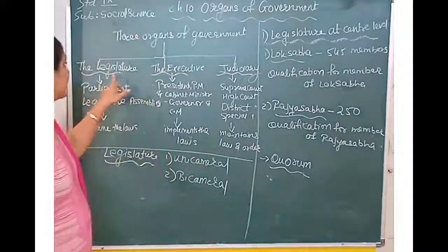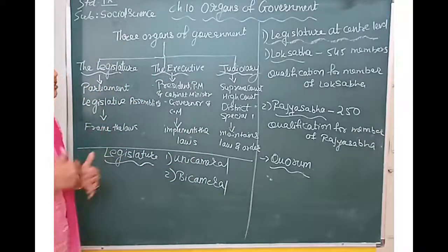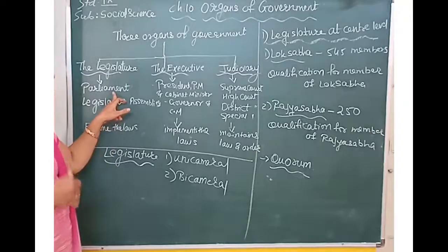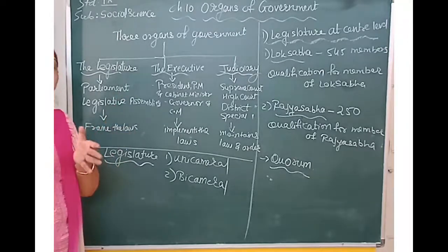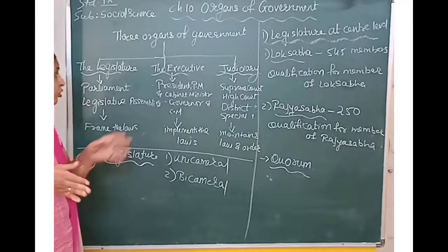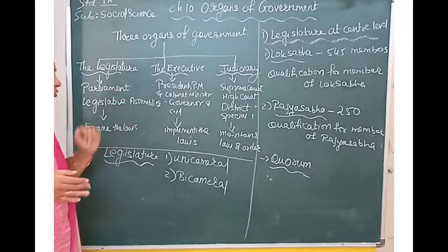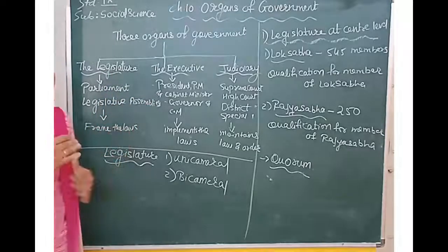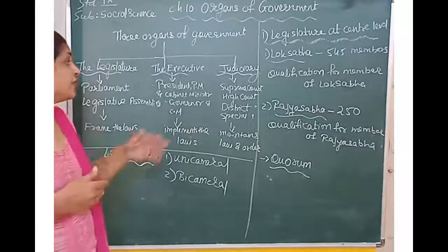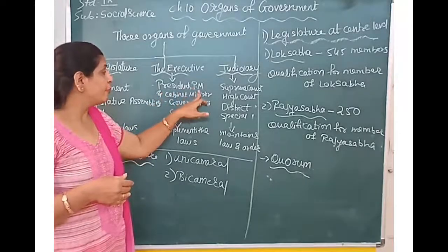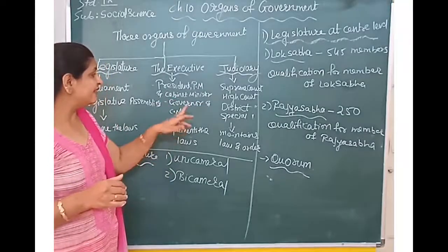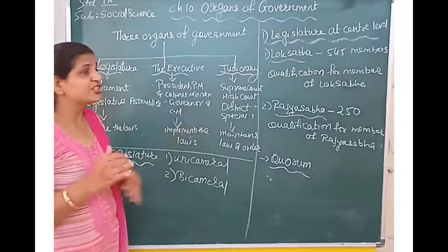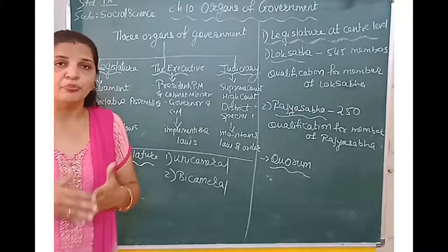First is Legislature. Legislature consists of Parliament at the center level. We also have the Legislative Assembly. For the Executive, we have the President, Prime Minister, and Cabinet of Ministers at the center level. At the state level we have the Governor and Chief Minister along with the Cabinet of Ministers.